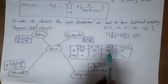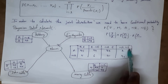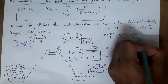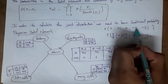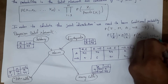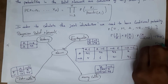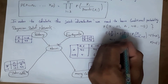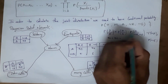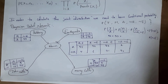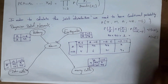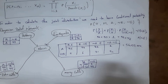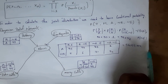Since robbery does not occur and earthquake does not occur, we look up those values. Probability of John calls given alarm rings is 90%, Mary calls given alarm rings is 70%, alarm rings given robbery not occur and earthquake not occur is 1%, probability of robbery not occurring is 99%, and earthquake not occurring is 98%. Multiplying all these values together gives a final result of 0.00056133.